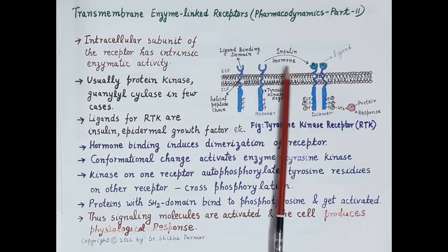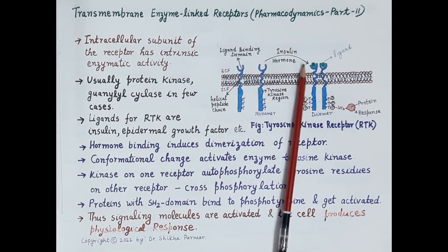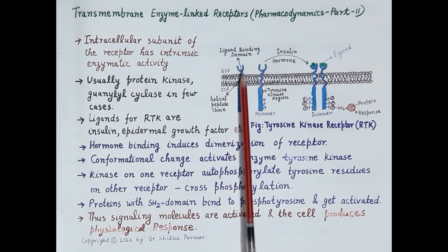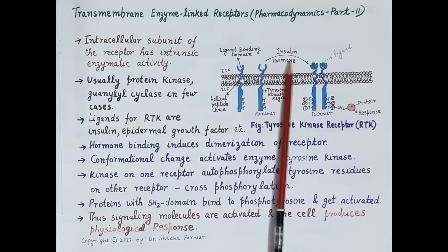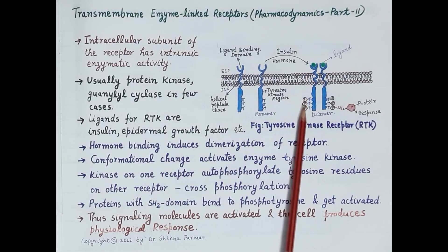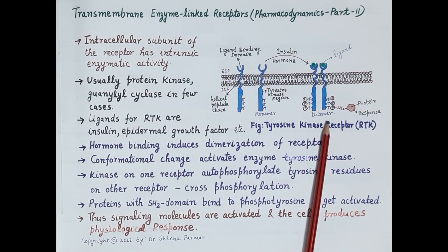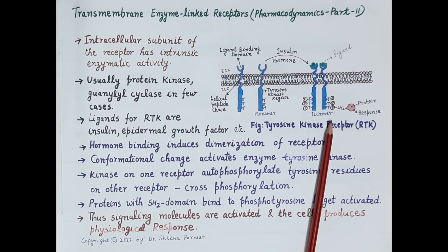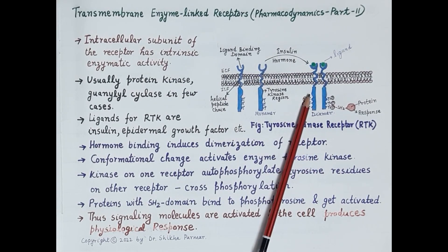Transmembrane enzyme-linked receptors are primarily activated by peptide hormones, for example insulin. The receptor exists in a monomeric state. Binding of the hormone, for example insulin, to the receptor induces dimerization of the receptor molecule and a change in the conformation of the receptor.